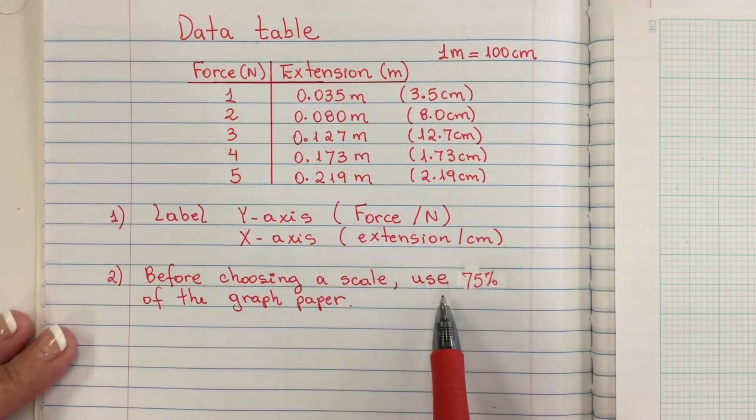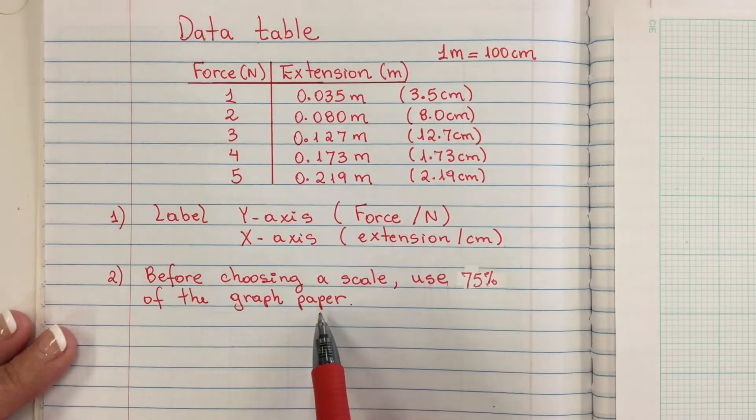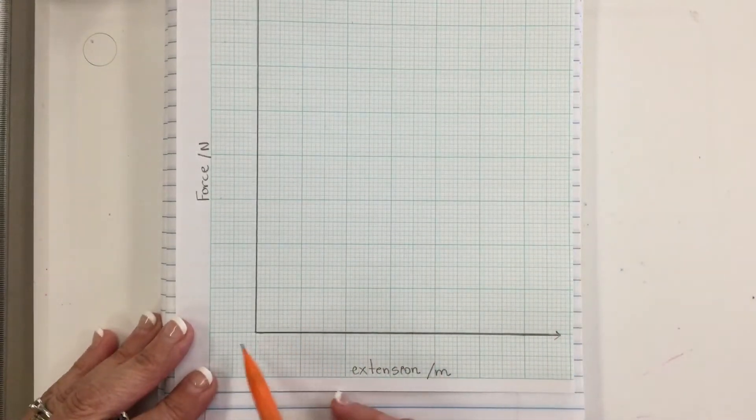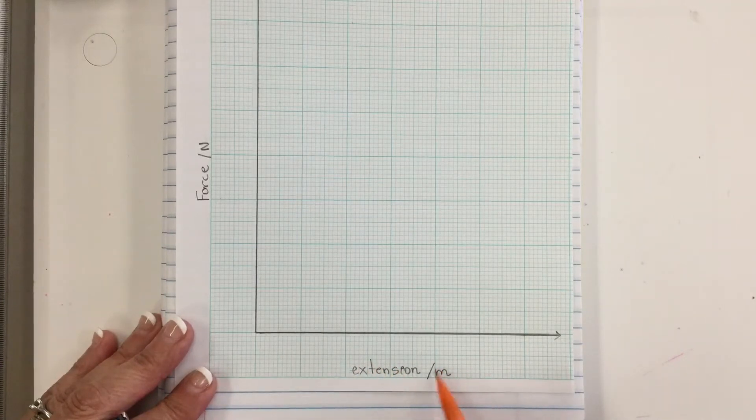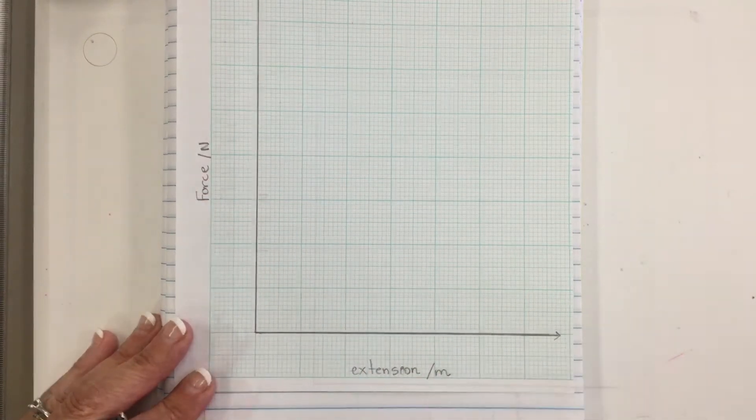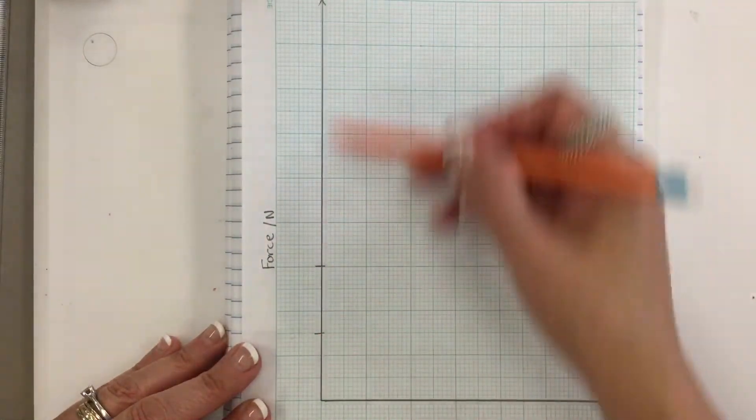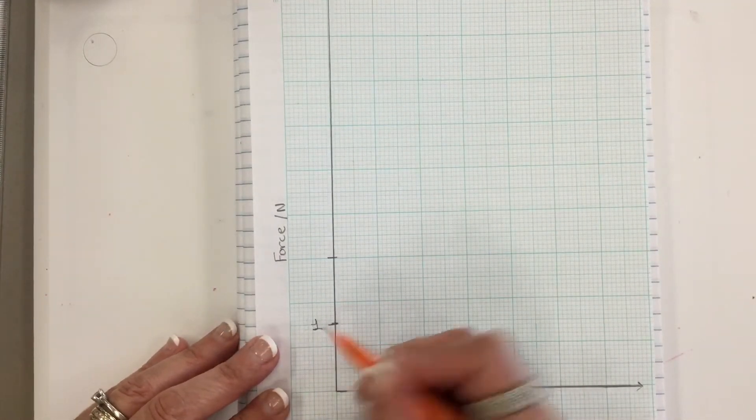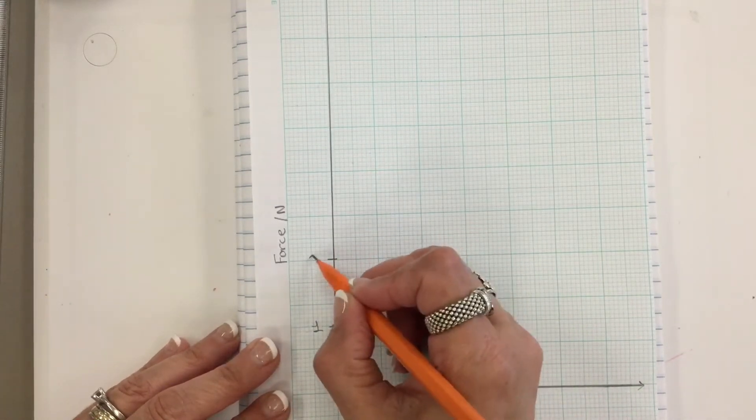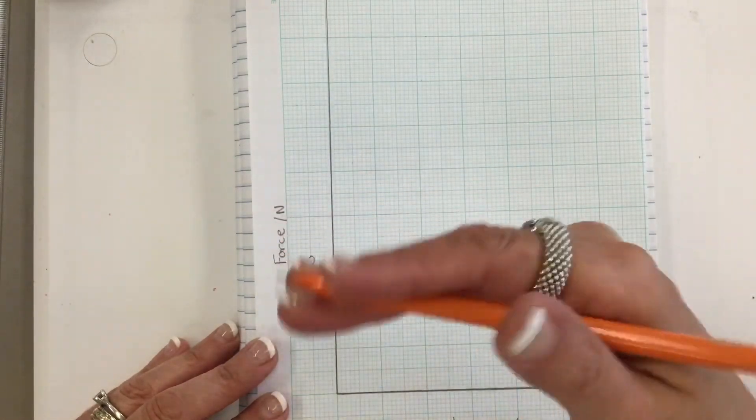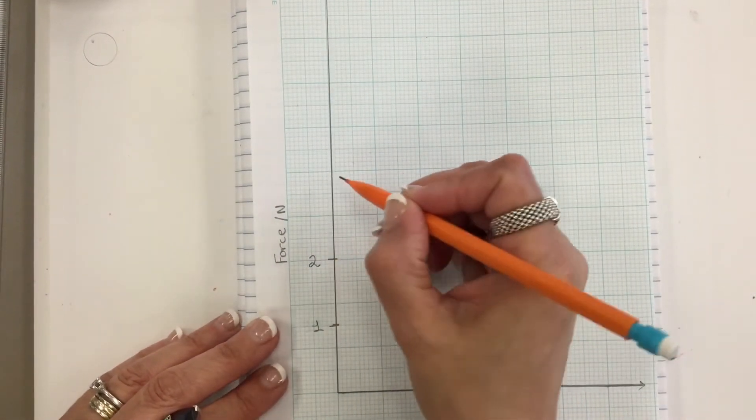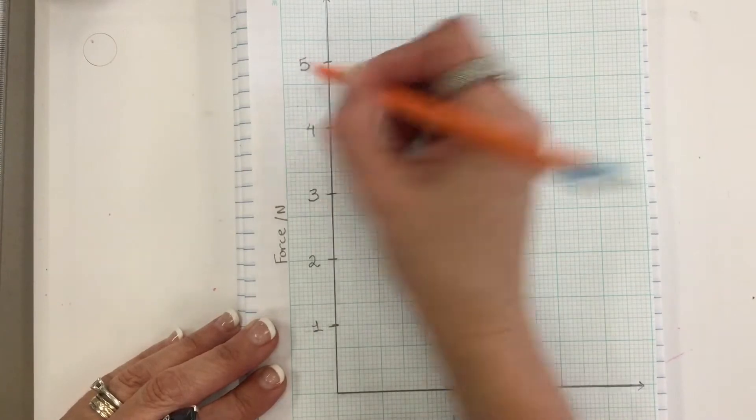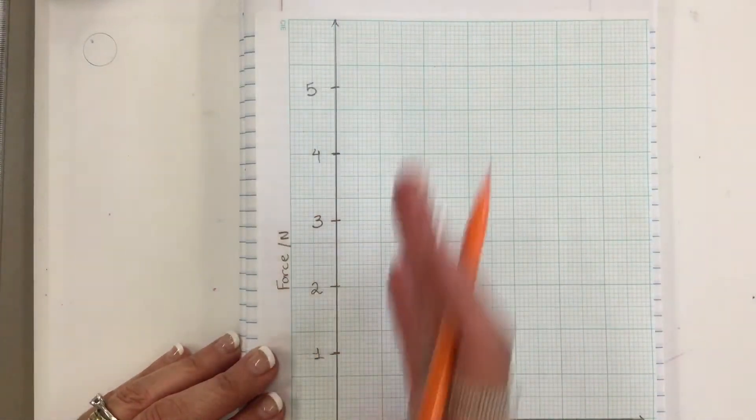Before choosing a scale, I will use 75% of this graph paper. Draw your y-axis which is labeled force, and the x-axis labeled extension, and the units on both. In order to use 75% of my y-axis, I am going to do one box and a half for one Newton, one box and a half, two, because we have equal increments. So that will be 3, 4, and 5. So as you see, I'm using a great portion of my y-axis.